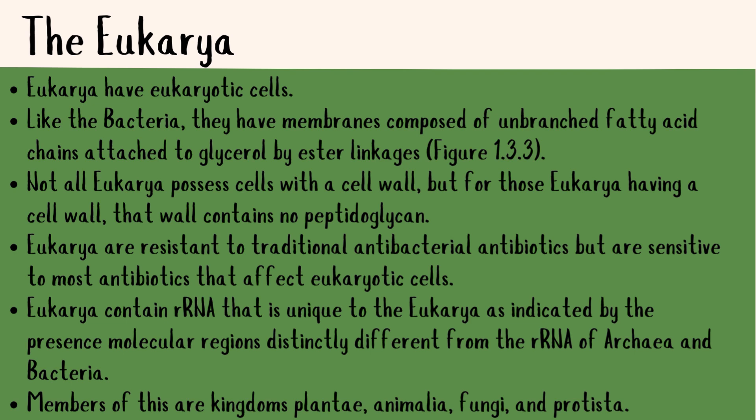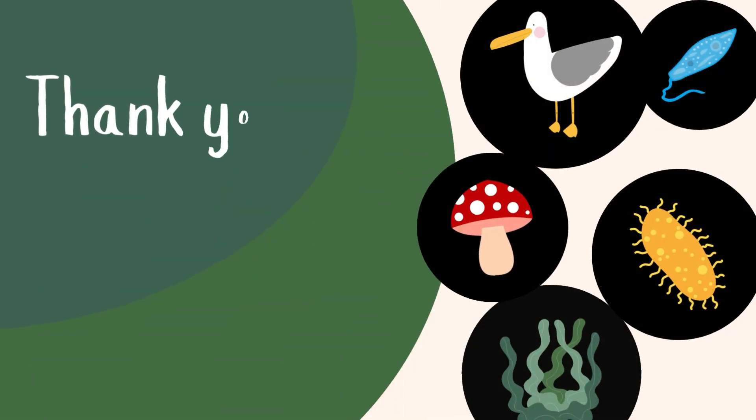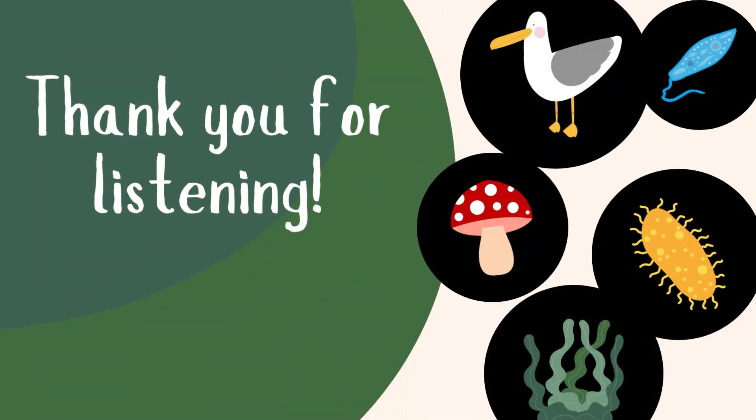Eukaryotes have diverse cell structures and are sensitive to antibiotics that target eukaryotic cells. Thank you for listening. We hope this presentation helped you understand how life is classified into kingdoms and domains. Remember, classification is not just about naming — it's about understanding the incredible diversity and complexity of life on Earth.